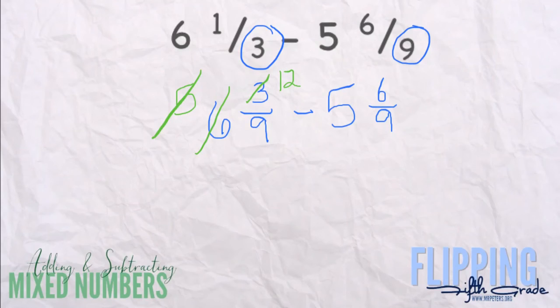So now 5 minus 5 cancels out and gives us nothing. Okay, and 12 minus 6 is 6. Keep the denominator the same.